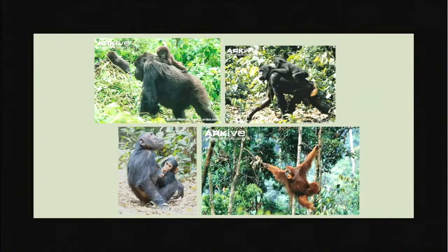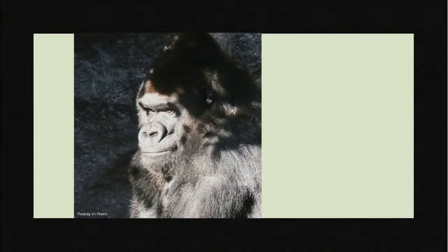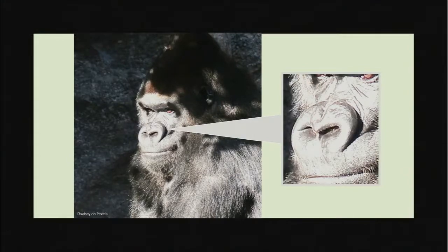Gorillas are one of four non-human great ape species, the others being bonobos, chimpanzees, and orangutans. The four great ape species are fascinating, each with unique characteristics and adaptations. One interesting feature: gorilla nose shapes and the lines right above their nostrils are unique per individual — they act like fingerprints. That is actually how researchers can identify gorillas in the field, by looking at their nose prints.